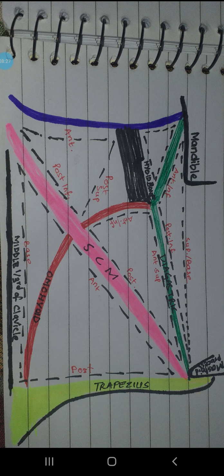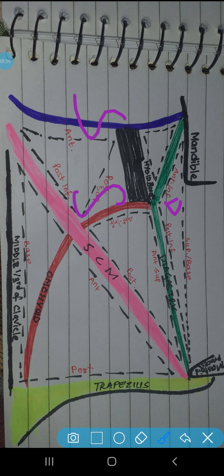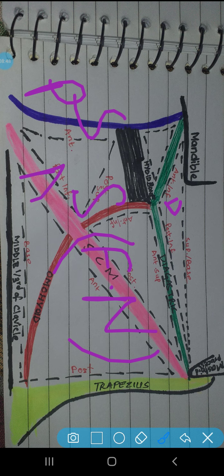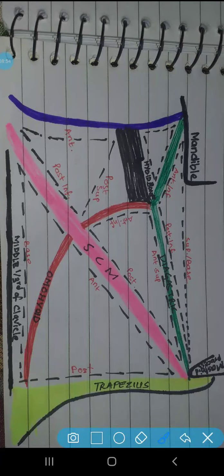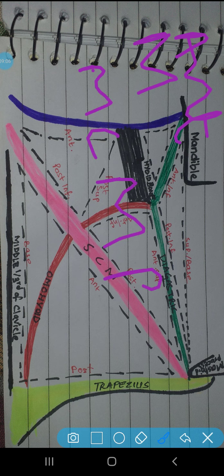The roof of the digastric triangle is made by skin, superficial fascia, facial nerve, platysma muscle, and deep fascia. For the floor of the digastric triangle: anteriorly it is formed by the mylohyoid muscle, and posteriorly in the floor you will see the middle constrictor muscle of the pharynx.